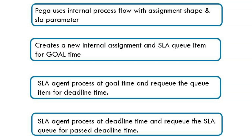The first step is Pega uses an internal process flow with an assignment shape and it accepts an SLA parameter. That internal process flow is spun up with the SLA parameterized — whatever SLA we pass, the parameter will use that SLA. Next, an assignment shape of type internal is created, then an SLA queue item is created and assigned to the SLA agent with a goal time. The SLA agent runs, picks the queue item, and processes the escalation activity.